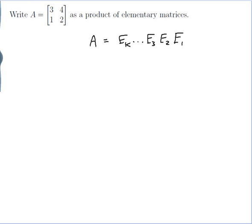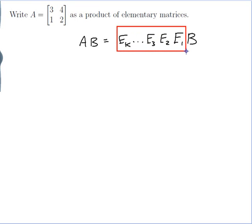Before we figure out how to do that, let's think about what it means for A to be a product of elementary matrices. If I multiplied all of these elementary matrices by matrix B, that would be the same as multiplying A by B. Multiplying B by all of these elementary row matrices has the effect of doing all of those row operations in turn on B. So multiplying A by B has the effect of doing all these elementary row operations in order from right to left on B, which might be quite useful.